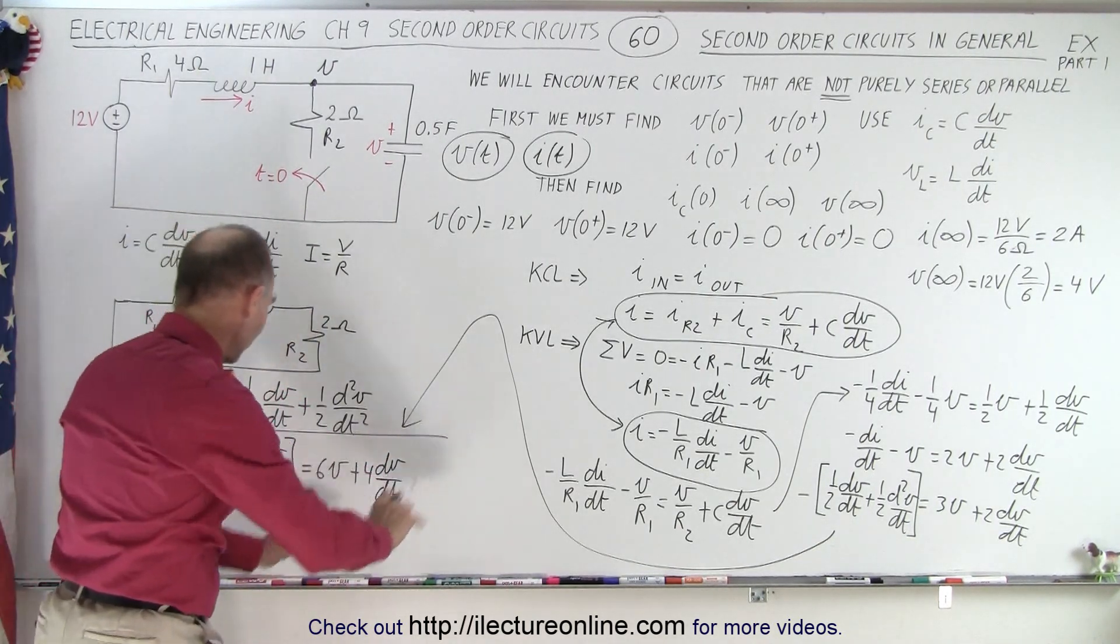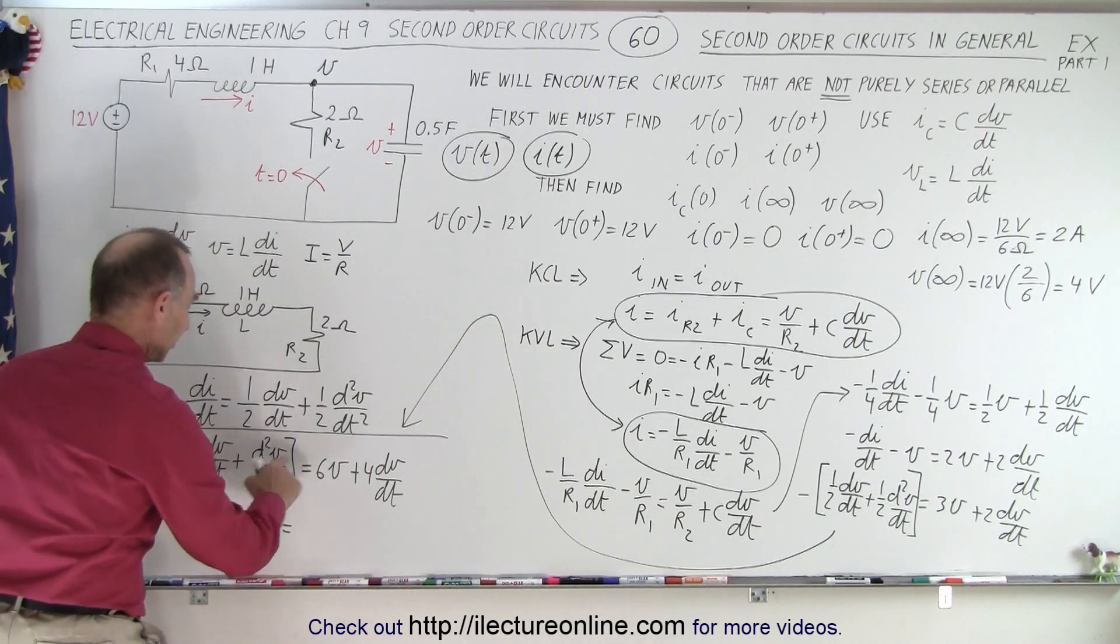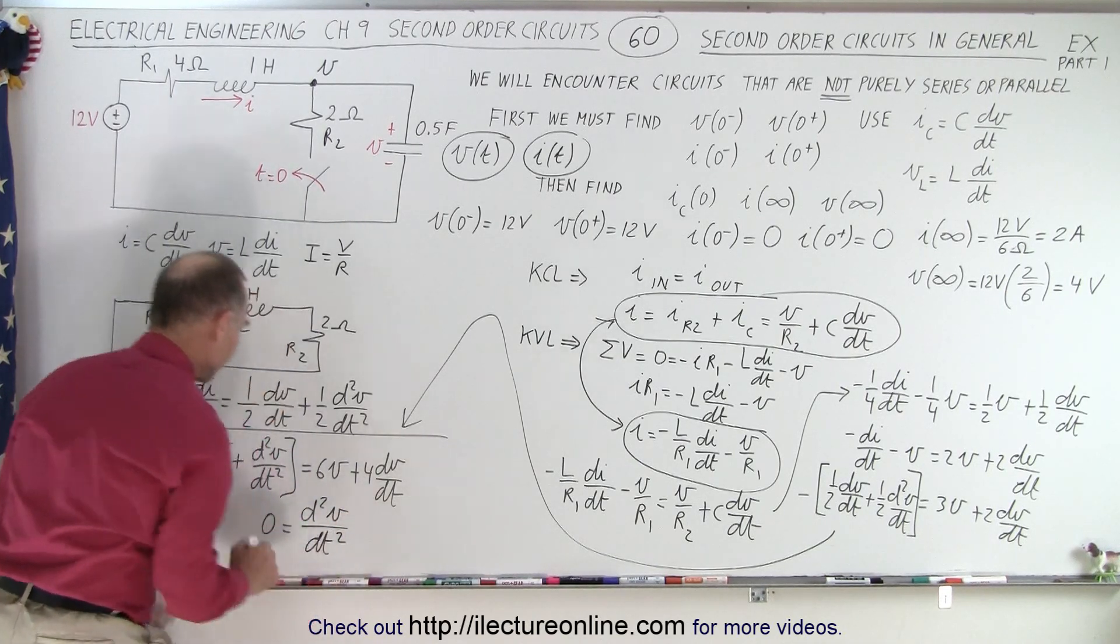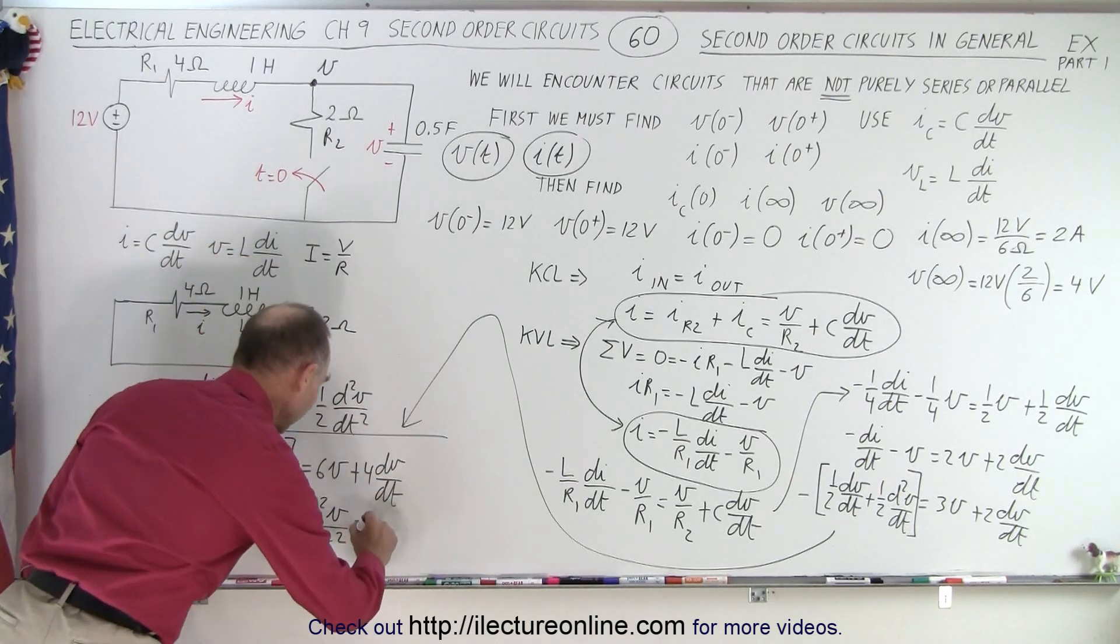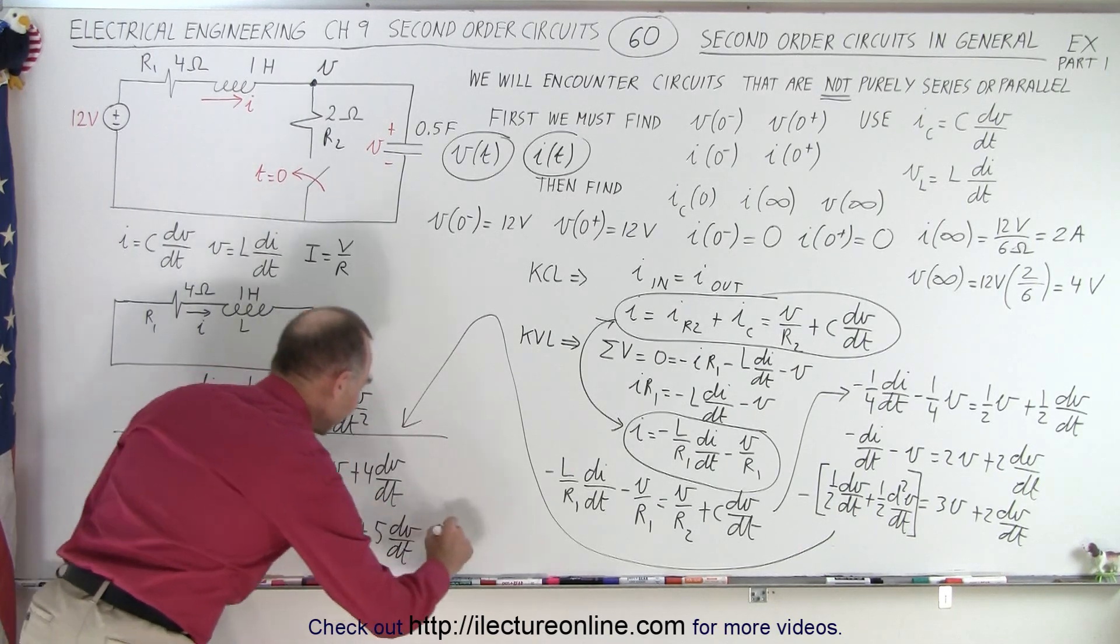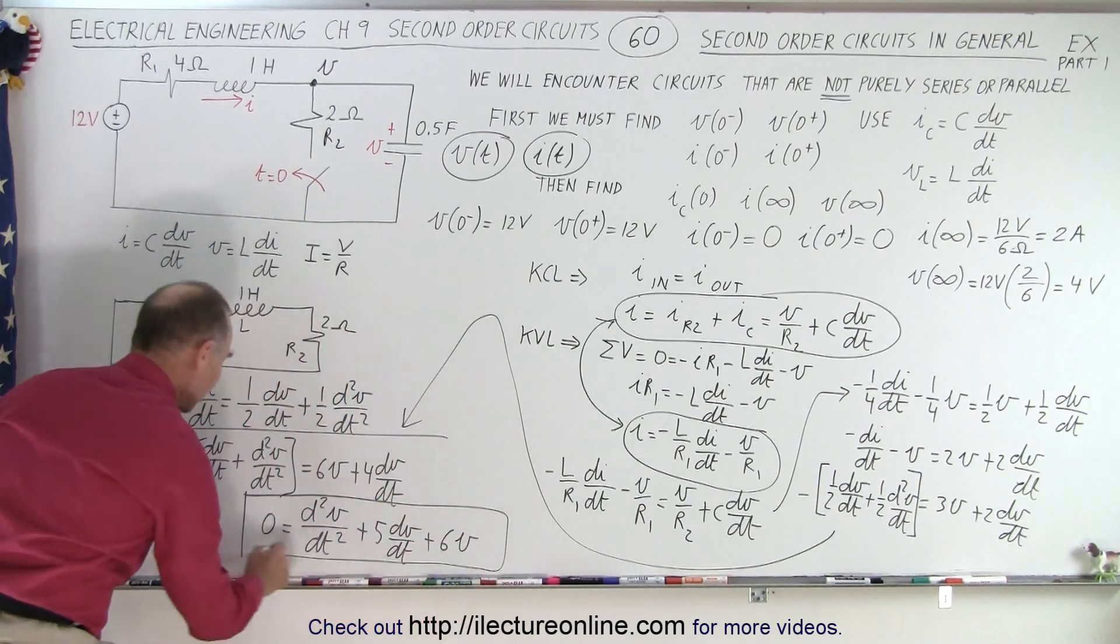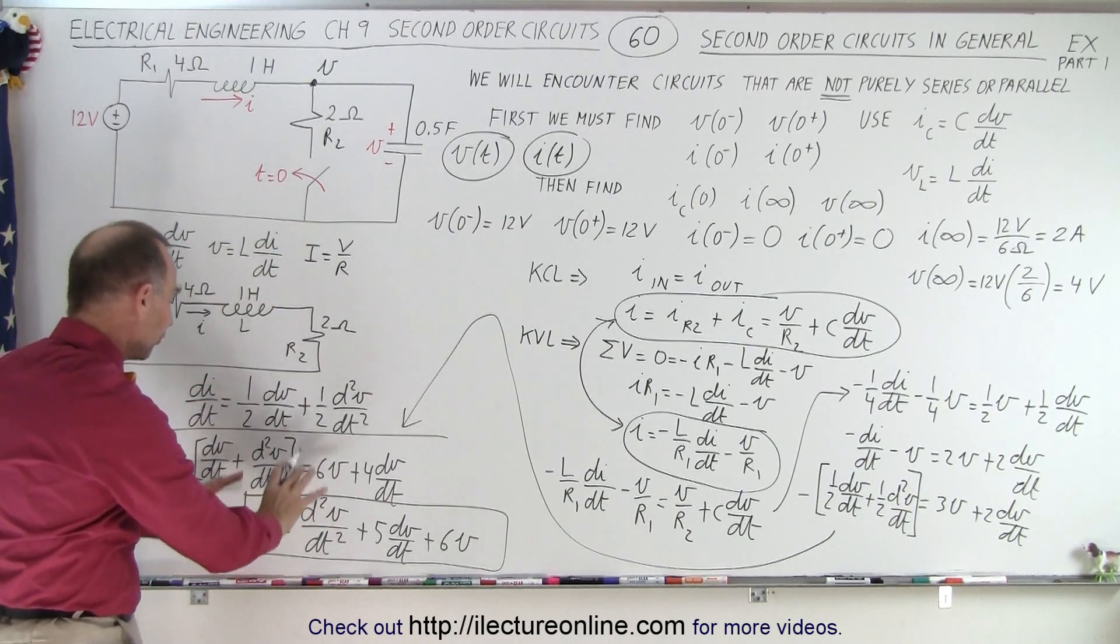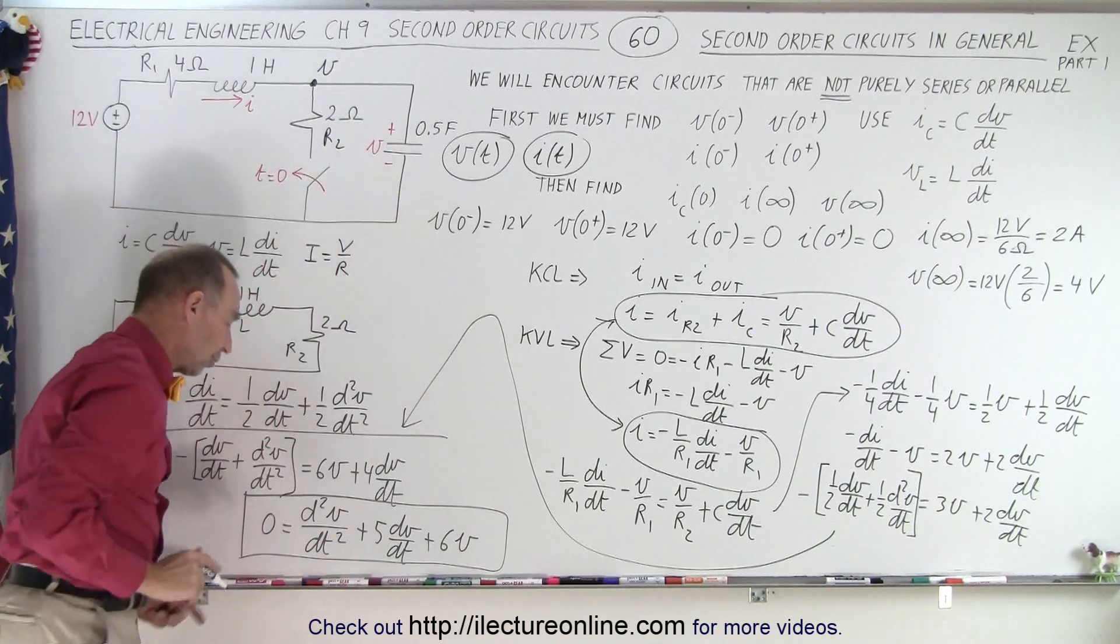So now moving everything over to one side, notice that these are both negative. So I end up with 0 is equal to, the negative becomes positive in this side, the second derivative of V with respect to time. Moving this across, that's minus dV becomes plus dV, but I already have 4 of them, that gives me plus 5 dV/dt, plus 6V, and all that equals 0. And here is my differential equation for the circuit that allows me to solve for the voltage as a function of time, of course for the voltage across the capacitor.